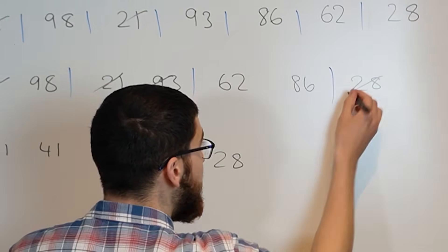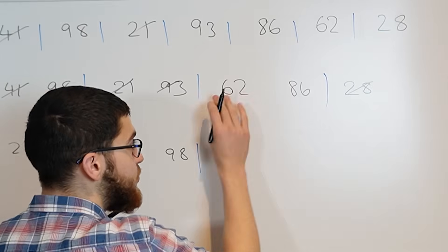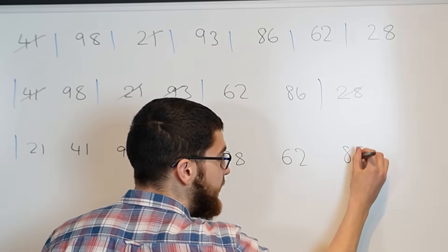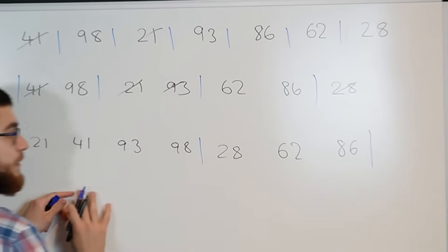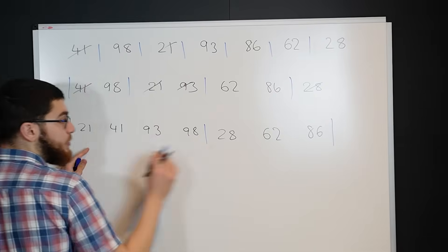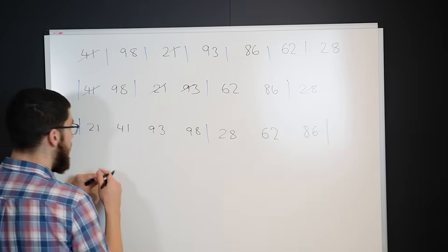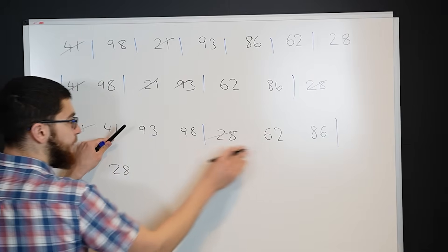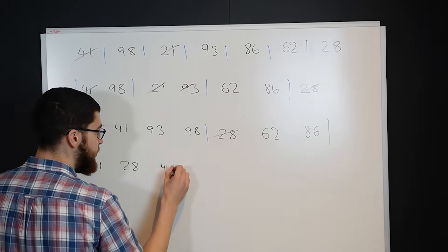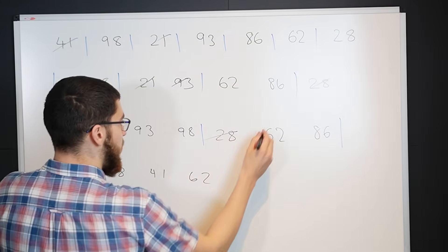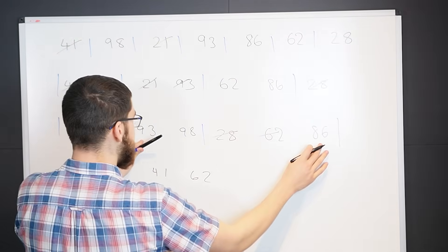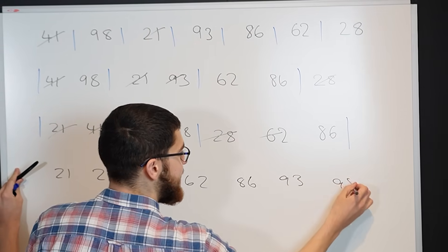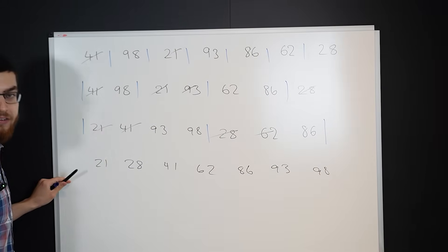Then we do the same thing again, starting with a left cursor — pointer on 41 and 21. We compare the two; 21 is the smallest, so that goes first. Eliminate 21, then we've got 41 and 93 — 41 is smallest. Eliminate 41. 93 and 98 — 93 is smallest. Eliminate that, and now we've just got 98 on its own. Then we've got 62 and 28 — 28 is smallest. Because we've eliminated this list, we can just add this list on the end since it's already sorted. Now we've got two pairs of sorted lists, and we do the same thing again. And boom, that's the merge sort.